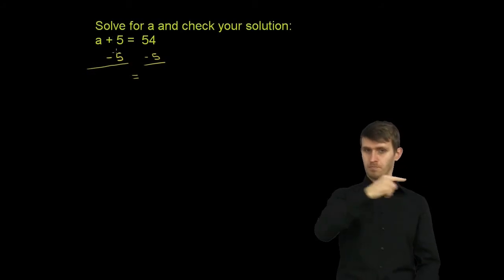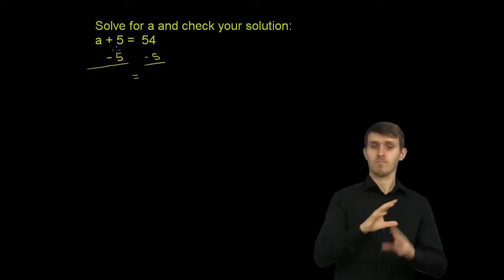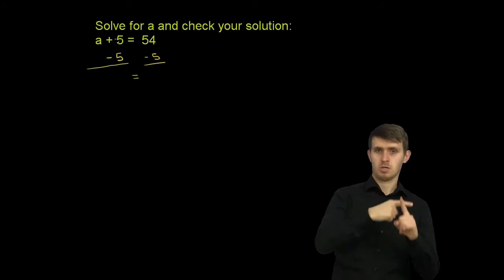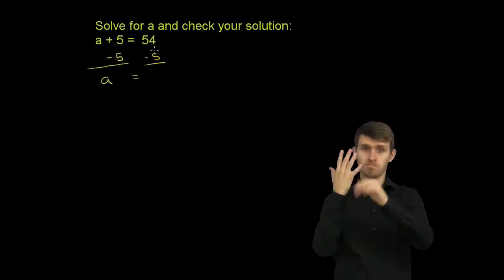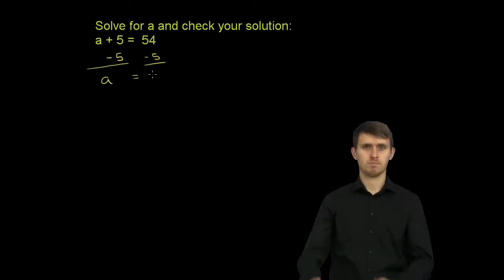So we have a plus 5 minus 5. Well, that's just going to be a plus 0, because you add 5 and you subtract 5, they cancel out. So a plus 0 is just a. And then 54 minus 5, that is 49.